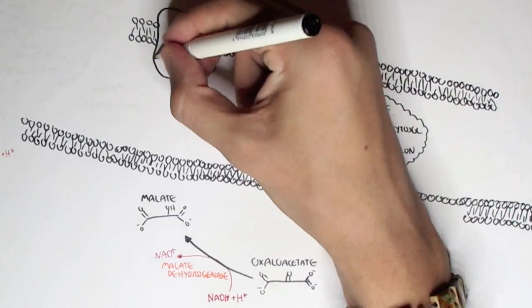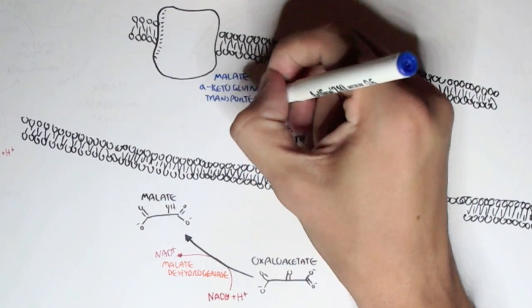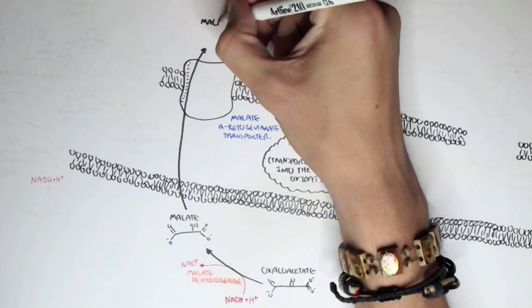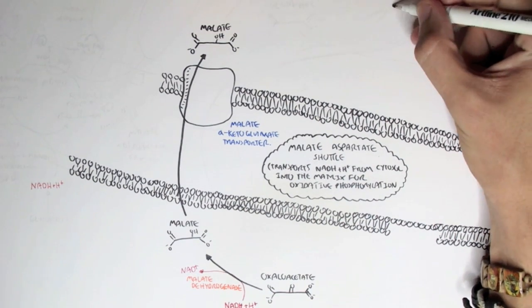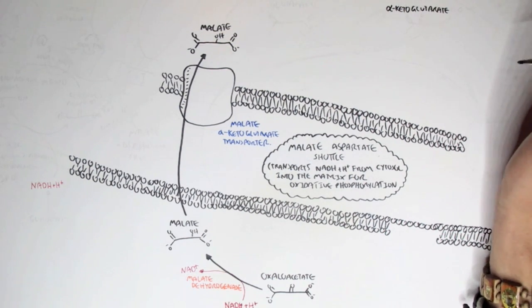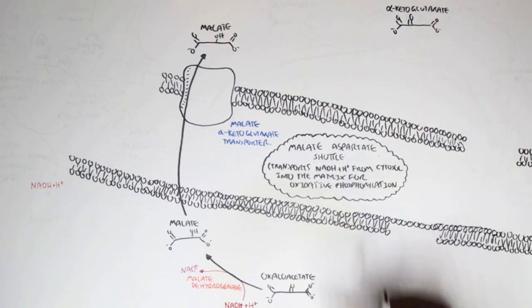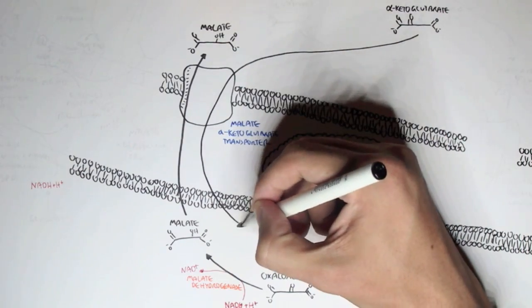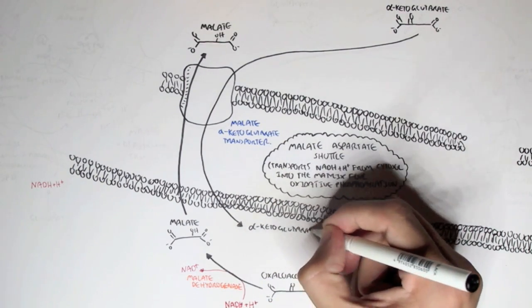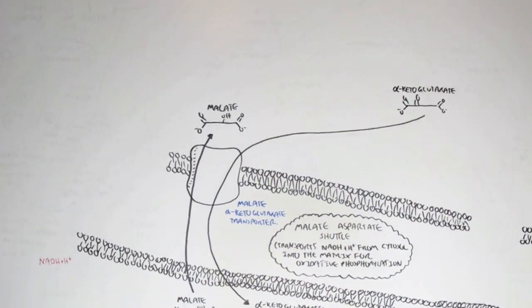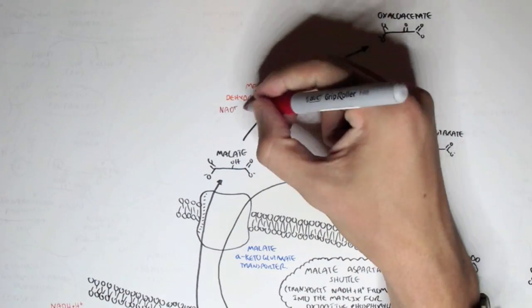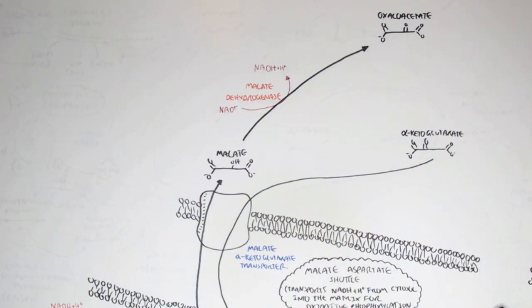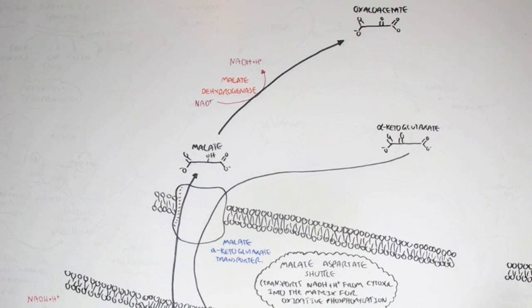Malate can now travel through the outer mitochondrial membrane and through the malate alpha-ketoglutarate transporter, which allows malate to go from the cytoplasm into the mitochondrial matrix. This transporter can also transport an alpha-ketoglutarate molecule from inside the matrix to the outside. So here we have alpha-ketoglutarate from the mitochondrial matrix traveling to the cytoplasm. Malate can then convert back to oxaloacetate through malate dehydrogenase, and an NAD from the matrix is reduced to NADH.